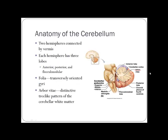The cerebellum is described as having arbor vitae — tree-like or branch-like projections. It is separated into right and left hemispheres, and each hemisphere has three lobes.